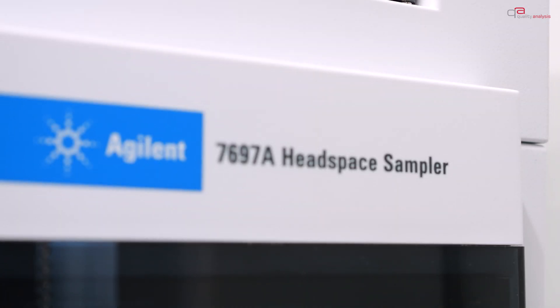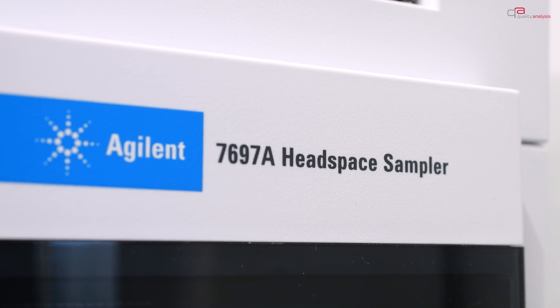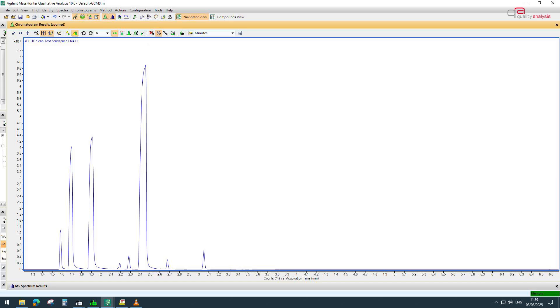Here, too, the analysis can be automated using a headspace autosampler. The substances contained in the sample are separated and detected in the same ways as for the GC-MS analysis already described.